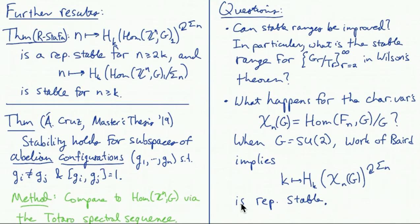So a few questions. Can the stable ranges be improved? So one question in particular, I mentioned that I don't know a stable range bound for G_R mod T_R itself, and maybe if one understood that FI module better, maybe some better results would be possible in these other cases.